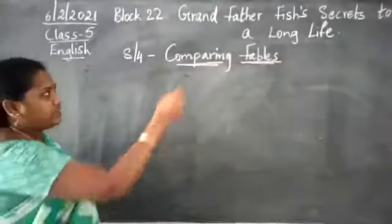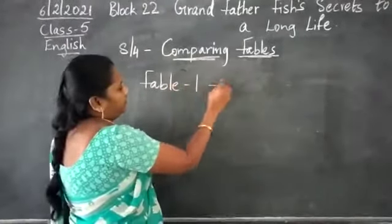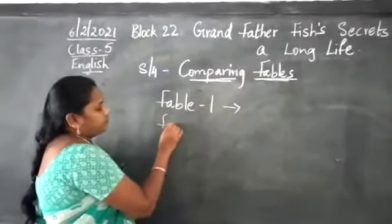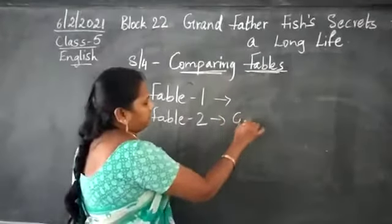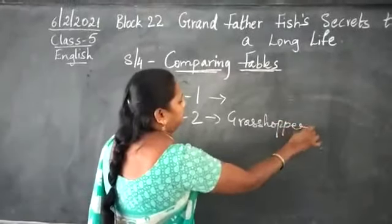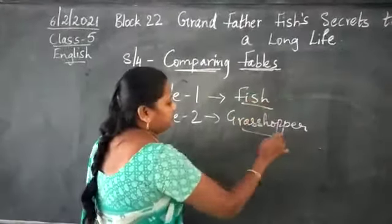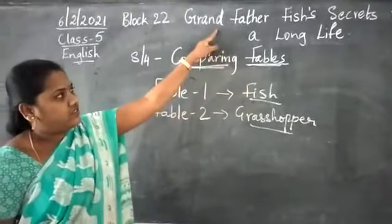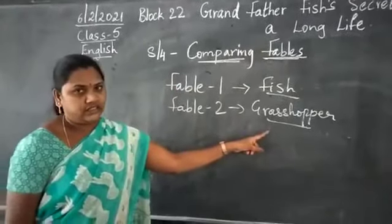We read two stories. One is Grandfather's fable. Fable 1 is Grandfather's Fish Secret and Fable 2 is regarding the grasshopper. Fable 1 is Grandfather's Fish Secrets to a Long Life and Fable 2 is The Ant and the Grasshopper.